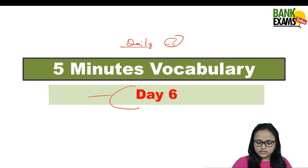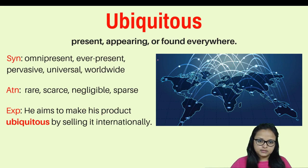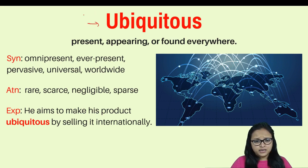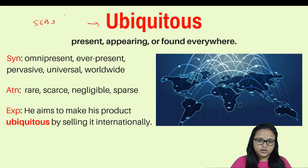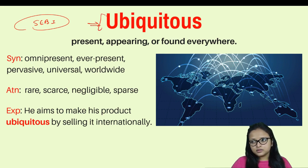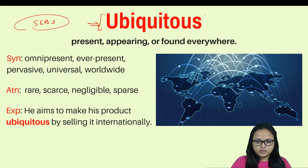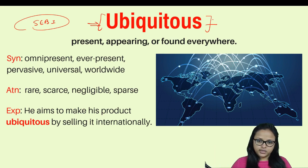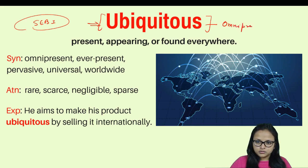We are going to start with the word 'ubiquitous.' Recently in the SEBI Grade A exam there was a reading comprehension paragraph, and from that paragraph this word was picked and the students were asked to find out its antonym. Ubiquitous means something or someone that is present everywhere — you can call it omnipresent.